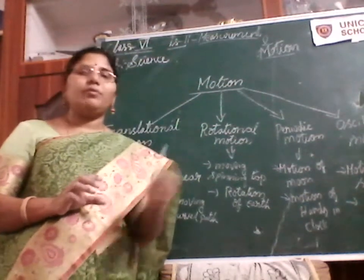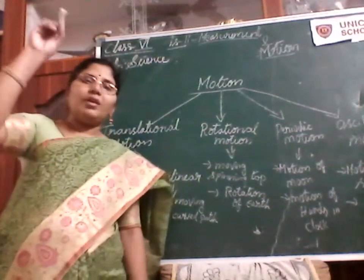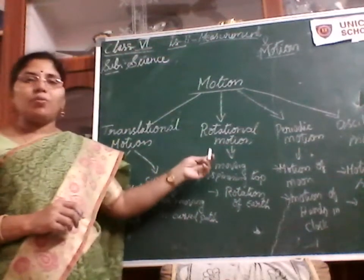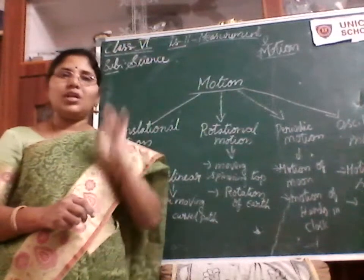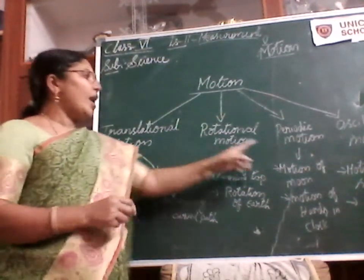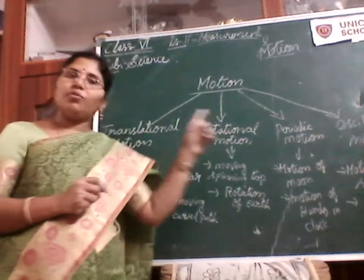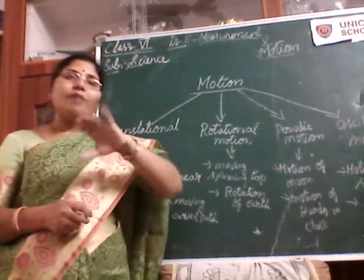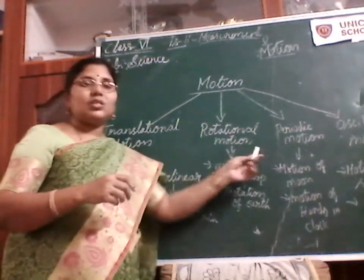For example, the movement of the moon around the earth. The moon takes one month to move around the earth, and after that time it returns to the same starting place. Similarly, the revolution of the earth around the sun comes under periodic motion. The rotation of the earth on its axis is rotational motion, but the revolution of the earth around the sun is periodic motion, since the planets return to the same place after a period of time.